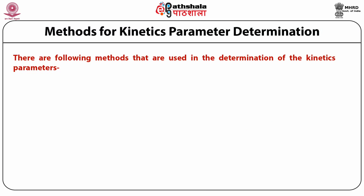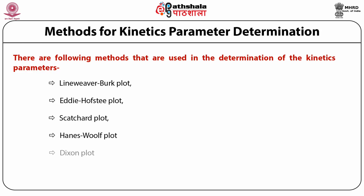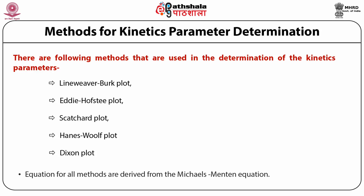The methods used to determine kinetic parameters are: first, Lineweaver-Burk Plot; second, Eadie-Hofstee Plot; third, Scatchard Plot; fourth, Hanes-Woolf Plot; and fifth, Dixon Plot. In this module we will discuss details of Lineweaver-Burk Plot, Eadie-Hofstee Plot and Scatchard Plot. The equations used to derive these plots are all based on the Michaelis-Menten equation.